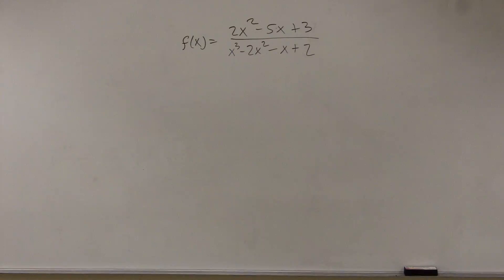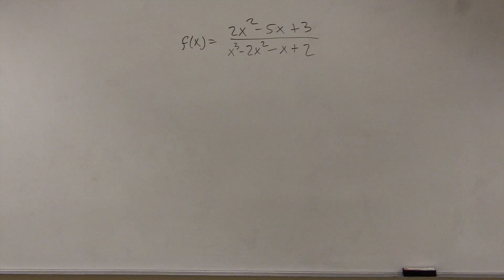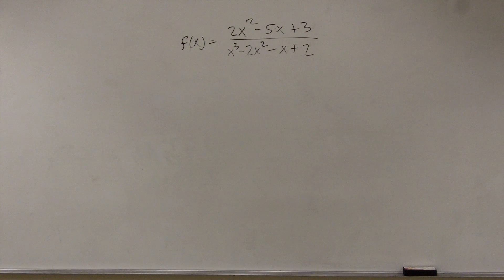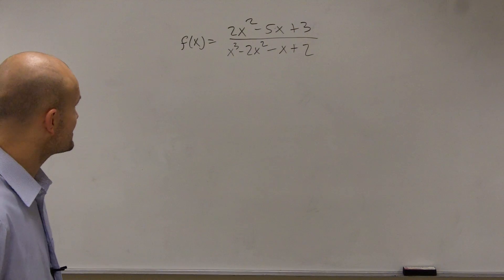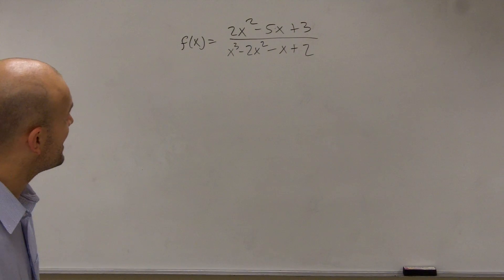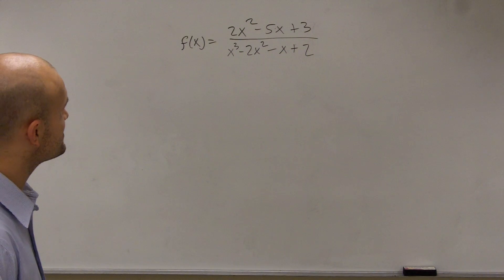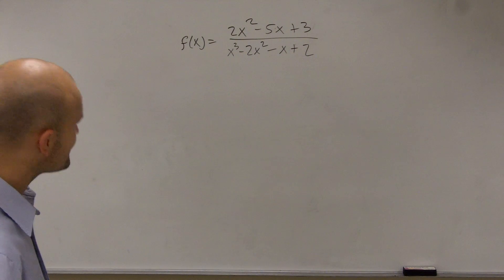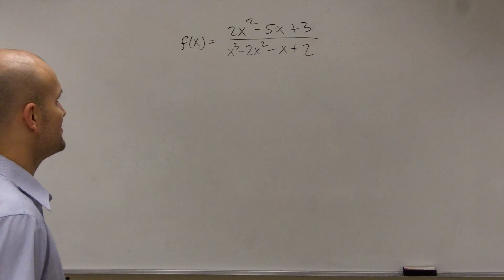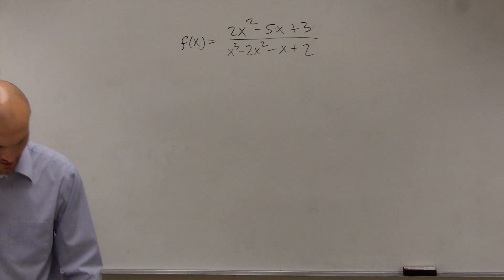Let's take a look at this problem and see what we can do with it. What we have here is f of x equals 2x squared minus 5x plus 3, divided by x cubed minus 2x squared minus x plus 2.